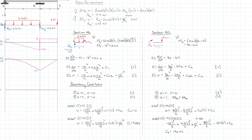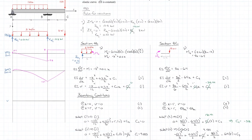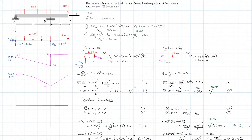Back-substituting C3 equals 190.42 into the earlier equation from boundary condition 3 gives C4 equals negative 318.77. So our four constants are: C1 equals 9.583, C2 equals 0, C3 equals 190.42, and C4 equals negative 318.77.